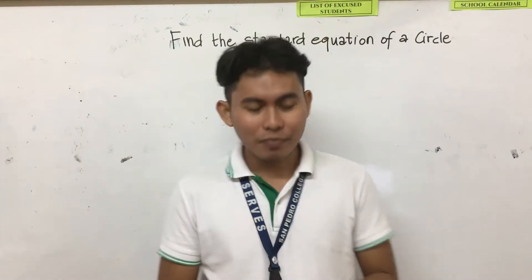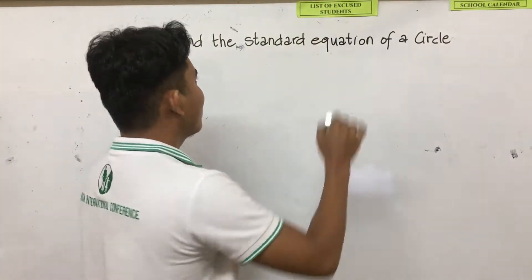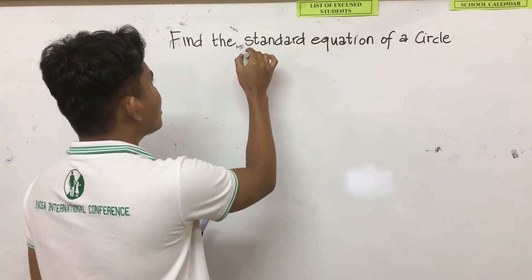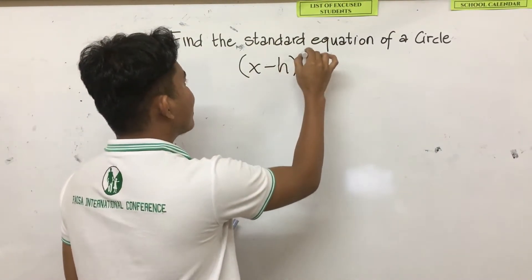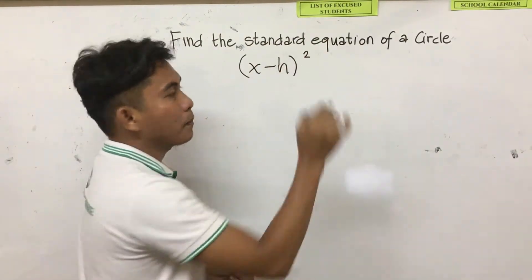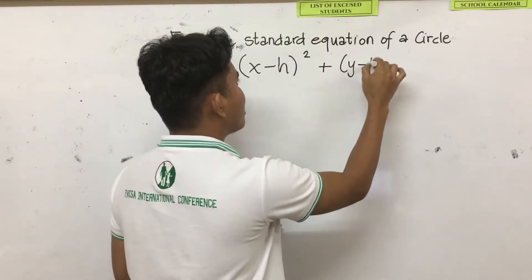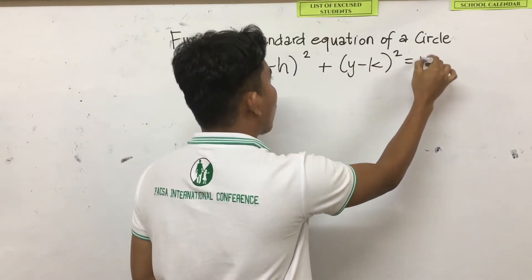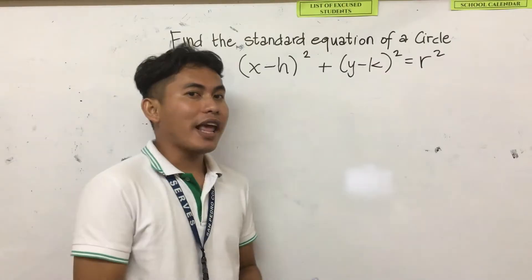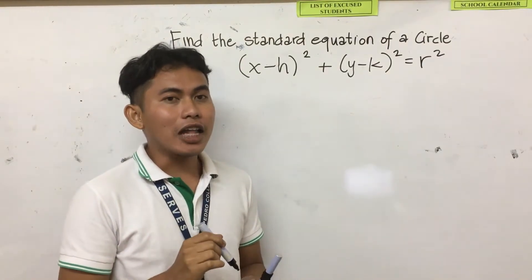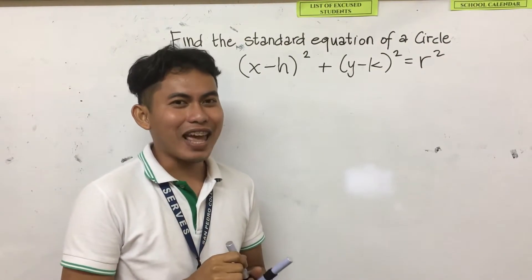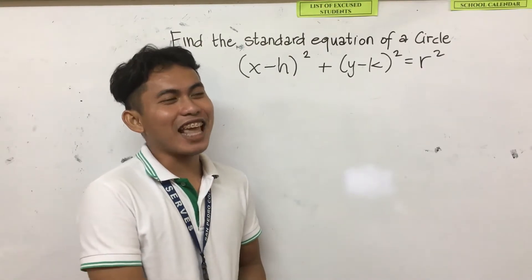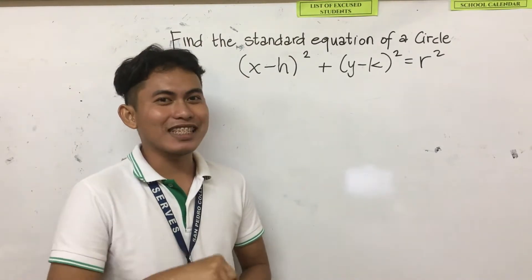So, what is the standard equation of a circle? We have x minus h squared plus y minus k squared is equal to r squared, in which h and k is your center and your radius is r. Again, your center is h and k, and your radius is r.